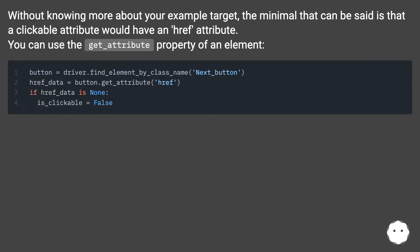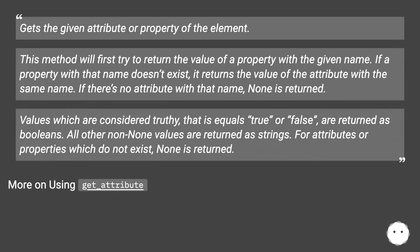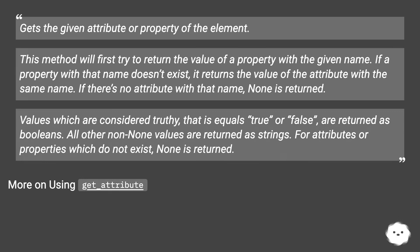You can use the get_attribute() property of an element to get the given attribute or property of the element. This method will first try to return the value of a property with the given name. If a property with that name doesn't exist, it returns the value of the attribute with the same name. If there's no attribute with that name, None is returned. Values considered truthy — equal to true or false — are returned as booleans; all other non-None values are returned as strings. For attributes or properties which do not exist, None is returned. More on using get_attribute.